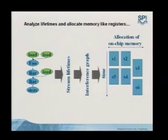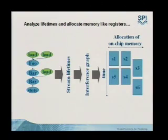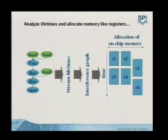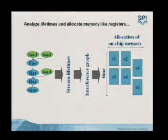In addition to extracting parallelism, you can also allocate local memory using the data flow graph. You compute stream lifetimes in exactly the same way you'd compute register lifetimes — a stream computed by a load and used by baz has a lifetime stretching from the beginning of that load to the end of baz. From those lifetimes you produce an interference graph, and using a technique analogous to register allocation you allocate the on-chip memory. It's slightly more complicated than register allocation because you're dealing with things of variable size.